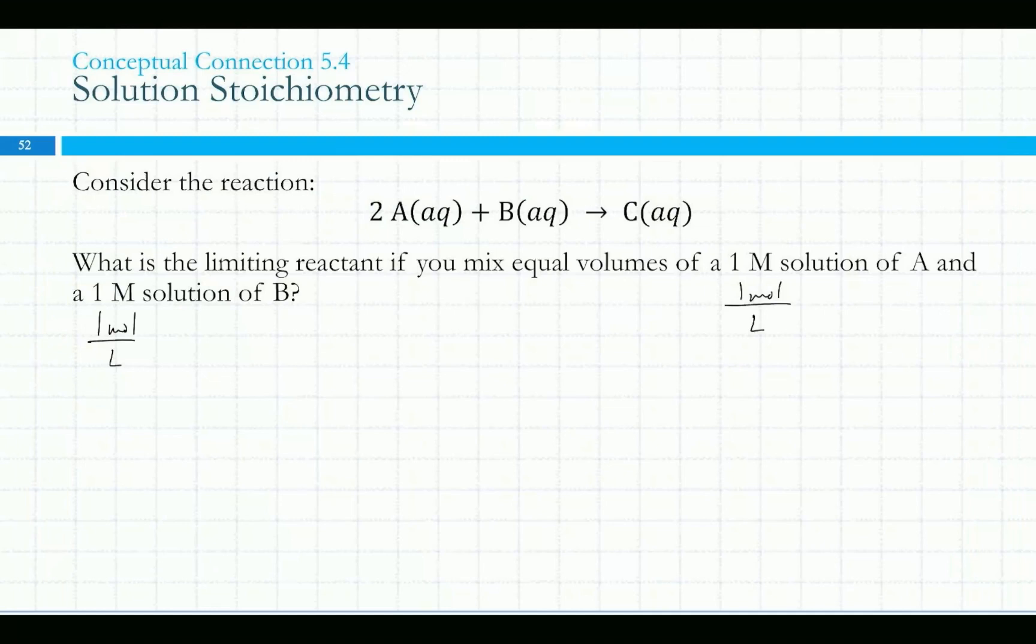Basically everybody's saying A. Going back to the question, we don't really need to calculate anything, but what does this 2 mean compared to the 1 in front of the B? This means I need twice as much A as I do B, so A gets used up more quickly, twice as fast. By the end of the reaction, if I have the same amount of each, which is where this equal volumes comes in, we're gonna run out of A first.